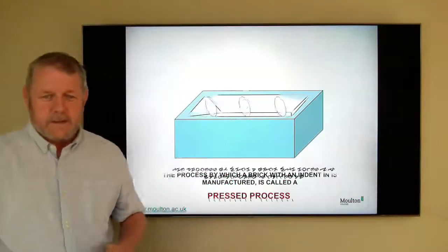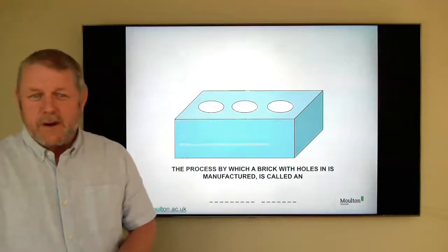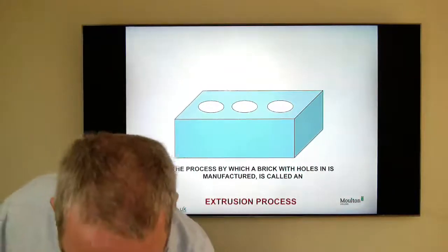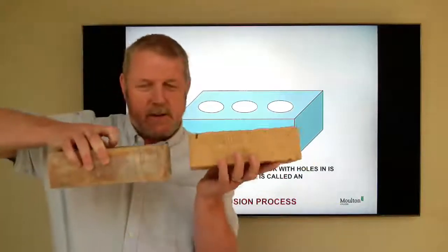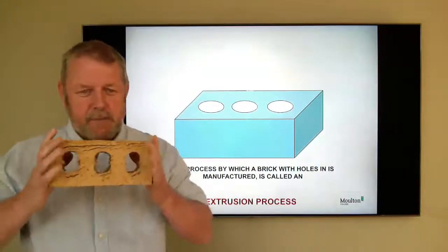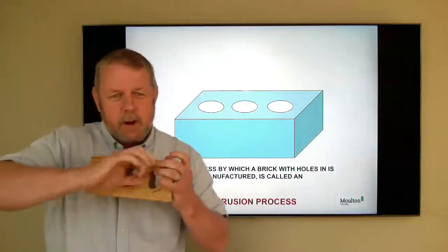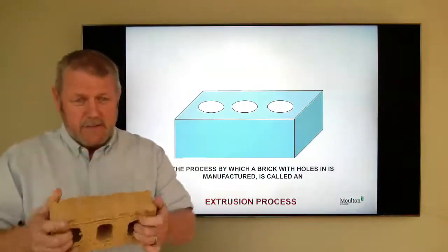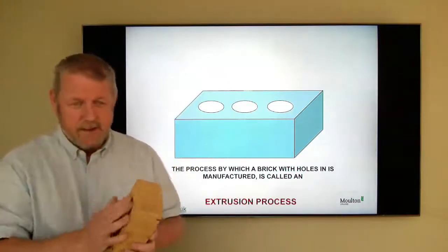We can also see bricks that have holes in them, three holes, twelve holes, six holes. The holes, the number of holes don't really signify anything other than a different type of extrusion process that they've gone through. It's formed into the rectangular shape and then it's forced through a machine that has a number of rods through it. The purpose of the holes are one it saves on clay and secondly it makes the brick a little bit lighter so that when we're carrying these about laying them every day they're not quite so heavy.